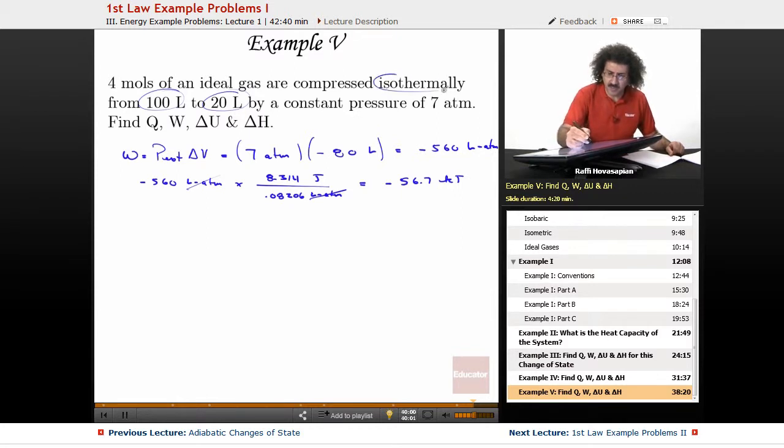Well, it's an isothermal process. So we already know that for an isothermal process, delta U equals zero. And if delta U equals zero, that means zero equals Q minus W, which means that Q equals W. So Q equals minus 56.7 kilojoules. So that takes care of Q.